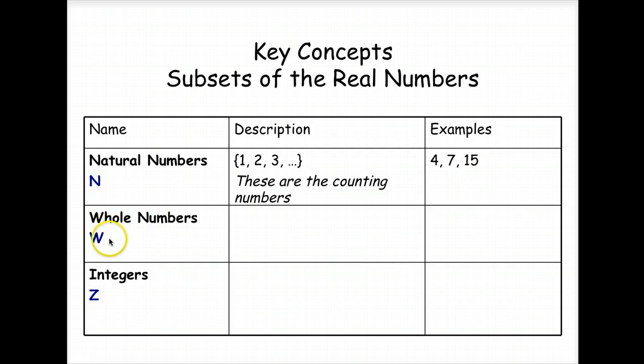Okay, let's look at the whole numbers. They can abbreviate it by using the W. What we do for whole numbers is we simply add a 0. I think of doughnuts adding the 0 to the natural numbers. That's all that's different. And examples are negative 15, negative 7, negative 4, 0, 4, 7, 15.